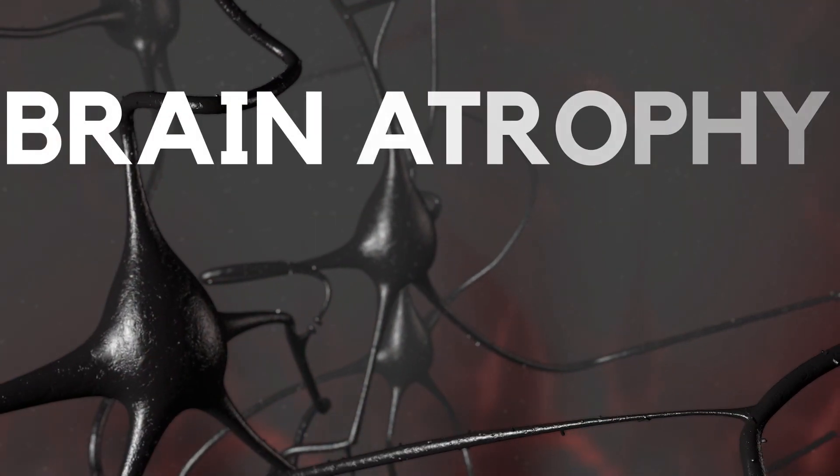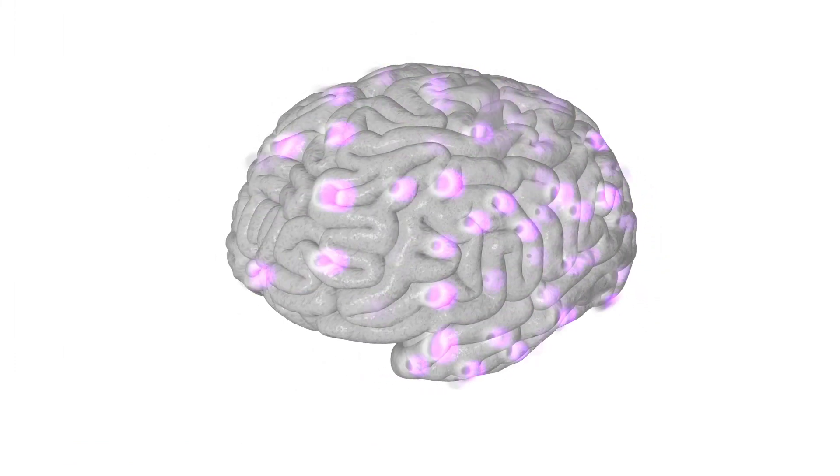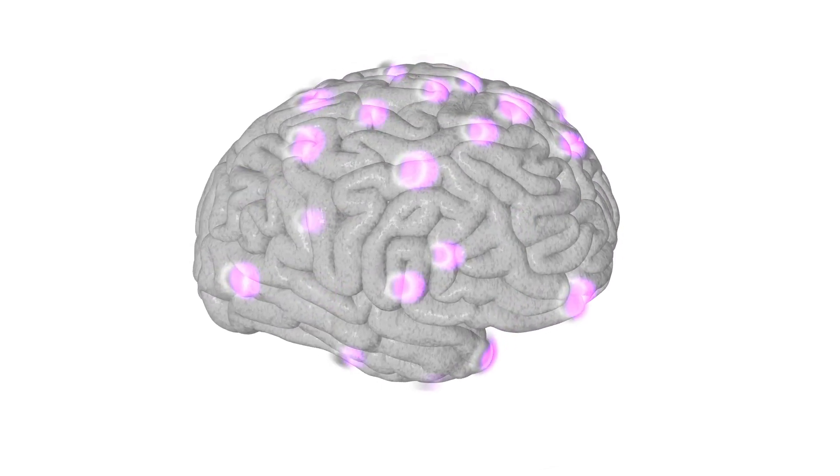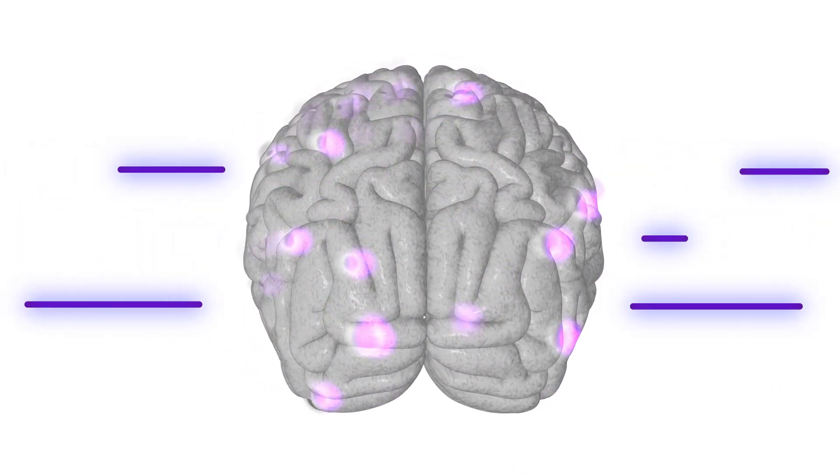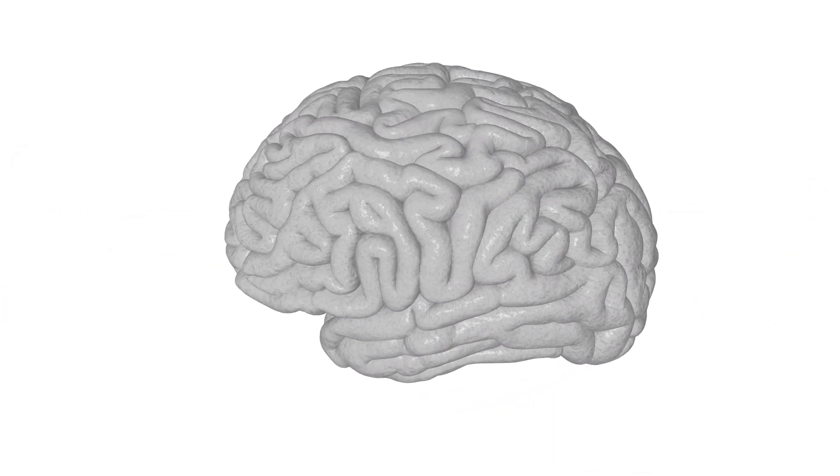This cell death leads to the third hallmark, brain atrophy. In other words, the brain shrinks. This happens because neurons no longer do their work. Your brain, which is very efficient in its use of energy, figures you don't need those neurons and lets them die. All these cell deaths cause the brain to get smaller.